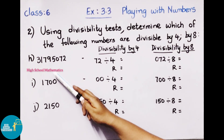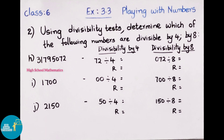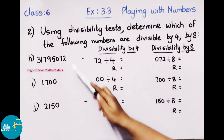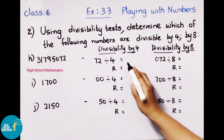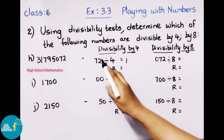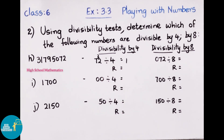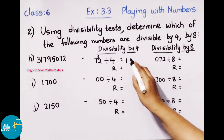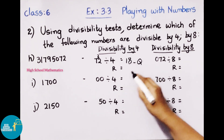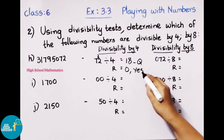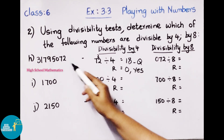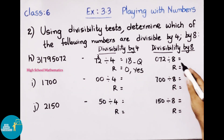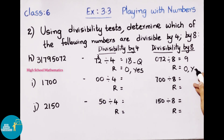Next number: 3,17,95,072. Checking divisibility by 4: last 2 digits are 72. 72 divided by 4 gives quotient 18, remainder 0. Yes, it is divisible by 4. Checking divisibility by 8: last 3 digits are 072. 8 times 9 is 72, remainder is 0. Yes, it is divisible by 8.